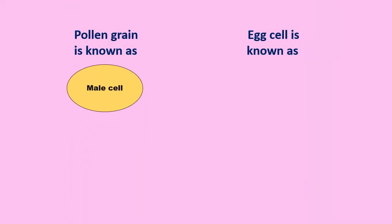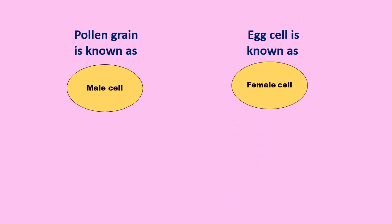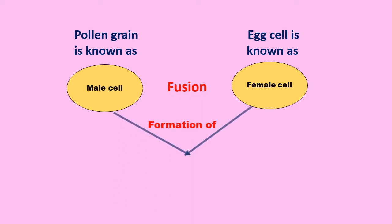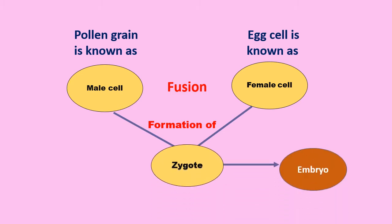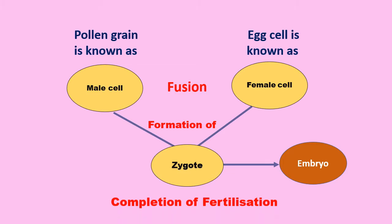The pollen grain is known as the male cell and the egg cell is known as the female cell. The fusion of male cell and female cell leads to the formation of a zygote. This zygote further develops into an embryo. The zygote formation marks the completion of fertilization.